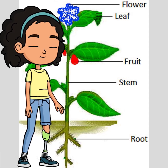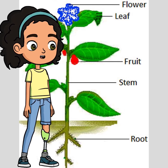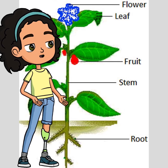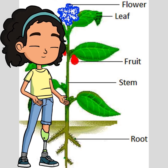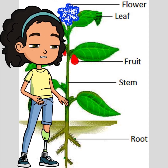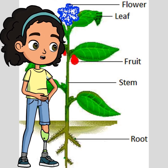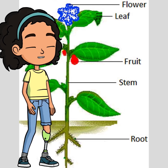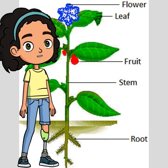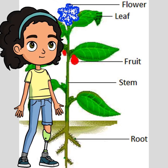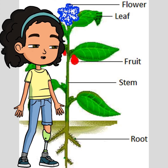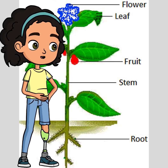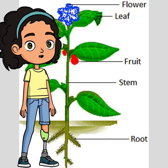Finally, flowers. They play a key role in reproduction, attracting pollinators and producing seeds so the plant can grow new life. So remember: roots, stems, leaves, and flowers are the main external parts of a plant.